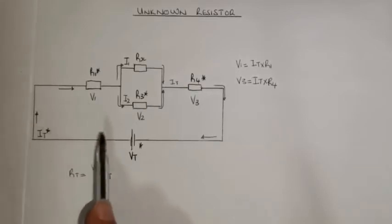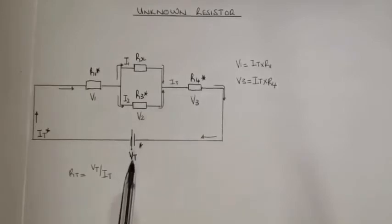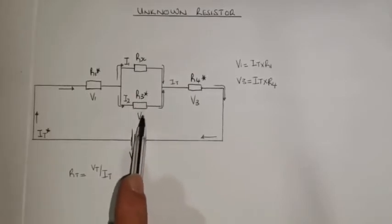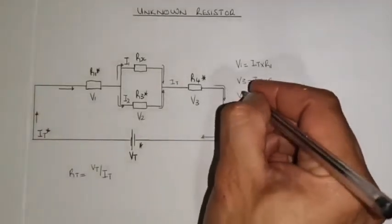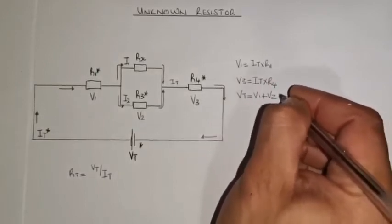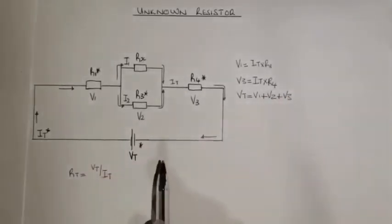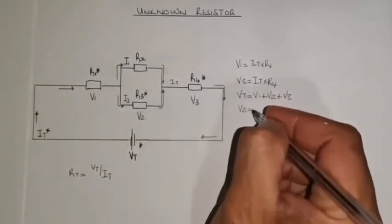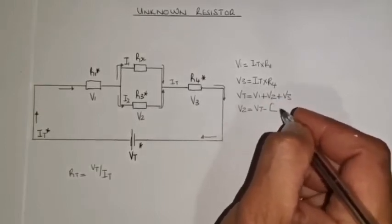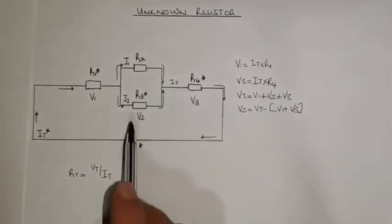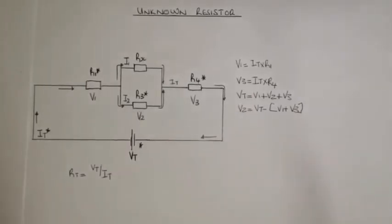Now, if I have those two voltages and I have my total voltage, I can use Kirchhoff's voltage law to calculate V2. I say that V_total equals V1 plus V2 plus V3. The voltage I need is V2, so I make V2 the subject of the formula: V2 equals V_total minus the sum of V1 plus V3. There I have what my voltage V2 is. You haven't calculated Rx yet, but you're getting somewhere — you're getting the values of the voltages.